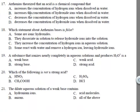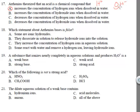Moving forward to number 17: Arrhenius theorized that an acid is a chemical compound that increases the concentration of hydrogen ions when dissolved in solution — that is correct. Remember, for Arrhenius you're looking at hydrogen ions for acids and hydroxide ions for bases. If the question asked about a base, you would expect the concentration of hydroxide ions to increase.